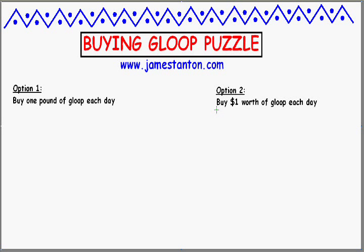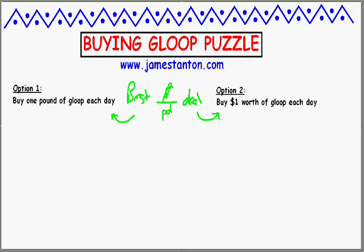Or option number two: instead of fixing the amount I buy, let's fix the amount I pay. I'm going to buy one dollar's worth no matter what. So one day I might get a pound of Gloop for that dollar; next day I might get one and a half pounds; another day I might only get a third of a pound. The amount I get will vary from day to day, but in the end I will have some Gloop and will have spent some money on it. Which of these two options gives me the best price per pound over a number of days?